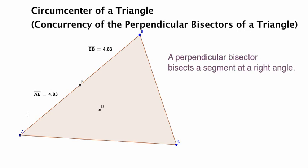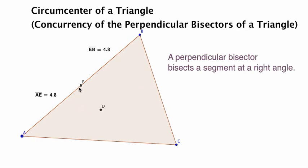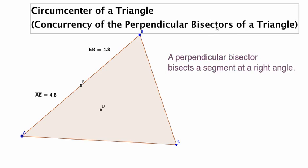You can see this is 4.83, 4.83, and no matter what I do here, point E is actually going to be situated perfectly in between A and B. So that's the bisecting part.